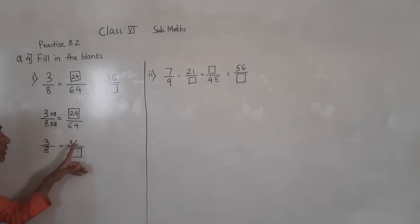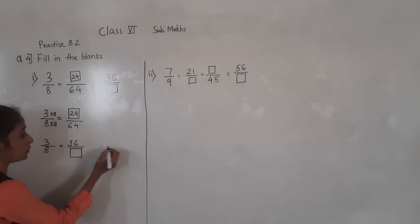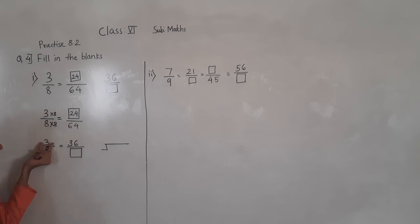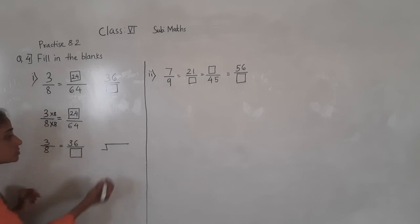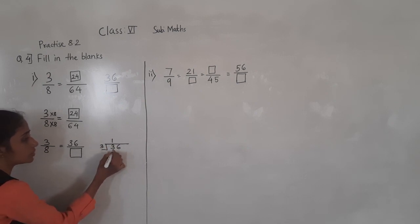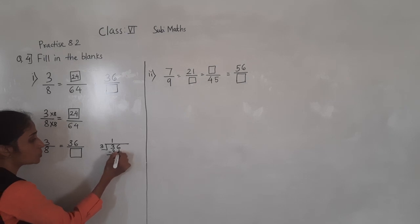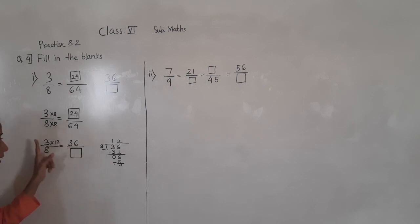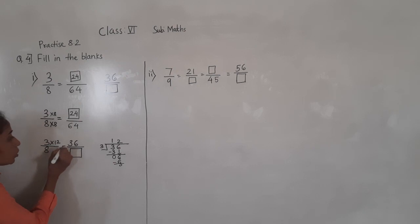Now for 3, with which number will we multiply to get 36? 3 twelves are 36. If we do not understand, for 36 divide by 3: 3 ones are 3, 3 minus 3 is 0, 6 comes down, 3 twos are 6 — so we got 12. So if we multiply 3 by 12, we get 36.